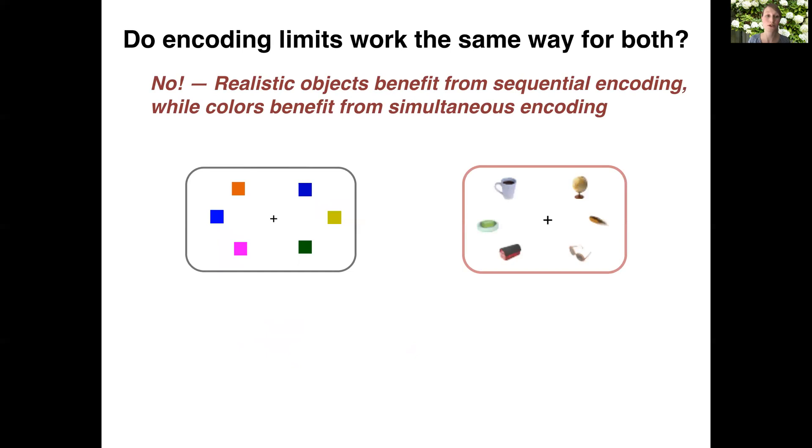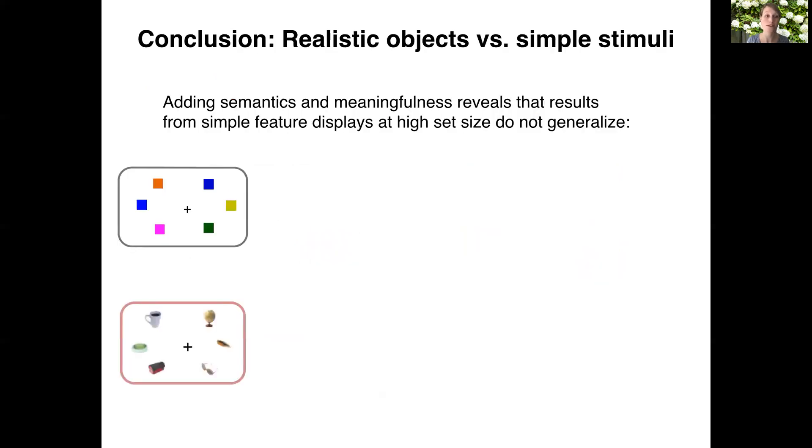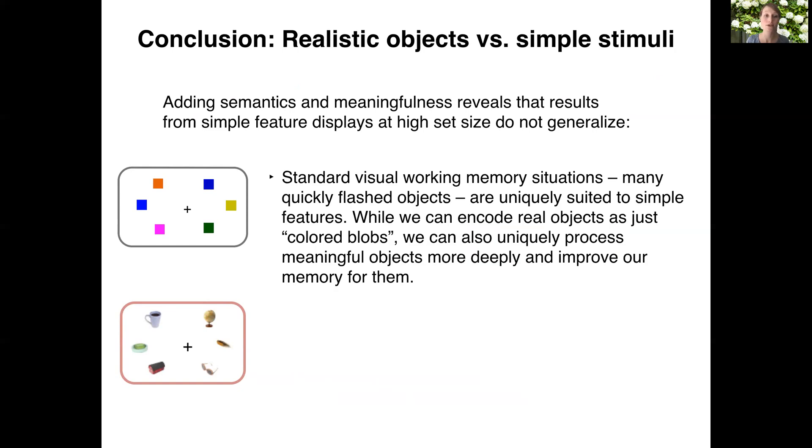So in sum, encoding limits appear to work in fundamentally different ways for realistic objects relative to simple stimuli. Simple features uniquely benefit from parallel encoding, while realistic objects benefit from the deep processing afforded by sequential presentation. Overall, these experiments suggest that results from simple features at high set sizes should not be generalized to real-world objects. Rather, it seems that standard visual working memory tasks, so many quickly flashed objects at encoding, are uniquely suited to simple features.